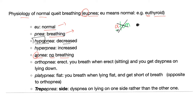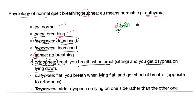Orthopnea: 'ortho' means erect, so when you're upright you breathe fine, but you get dyspnea when lying down. Platypnea is the opposite: 'platy' means flat, so when lying down you breathe fine, but get dyspnea when upright. Trepopnea: 'trepo' means side — dyspnea when lying on one particular side rather than the other.